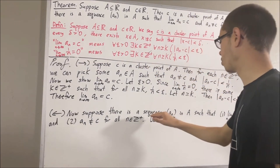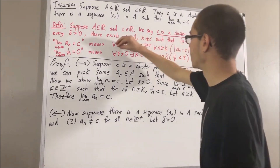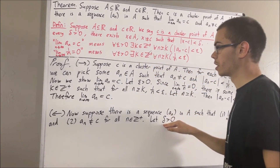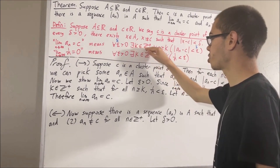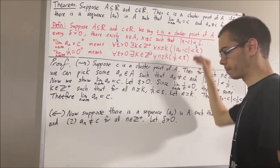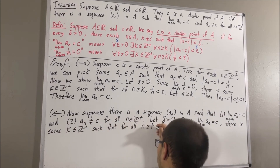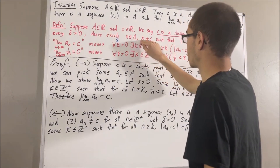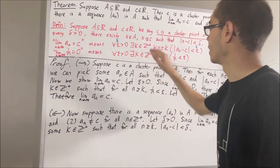Since we know that our sequence converges to C, we know the limit definition holds for every positive real number. So in particular, it must work for the positive real number delta. Taking epsilon to be delta, we have that there is some positive integer k such that for all positive integers n greater than or equal to k, the absolute value of An minus C is less than delta. Our goal is to find an element in A such that the distance condition holds, and we can show that A sub k is such an element.